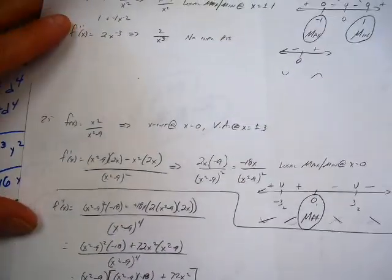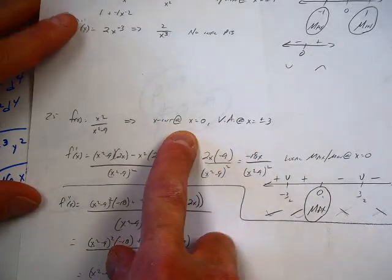Problem 25, on the other hand - original information, we've got a couple of vertical asymptotes, it's got an x-intercept.